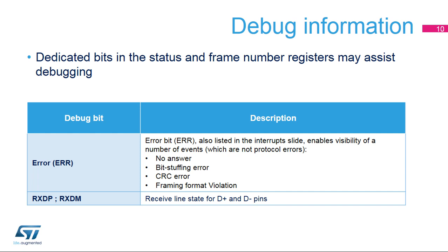Within the USB device controller, the dedicated ERR status bit provides some debug functionality in a USB application in relation to various events. The events that can trigger this debug bit are listed in this table. There is also a way to directly read the states of the D-plus and D-minus lines.